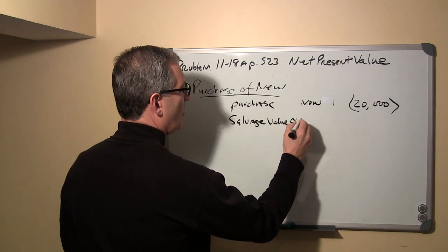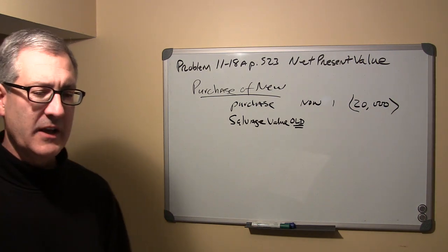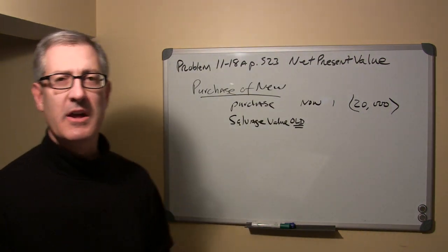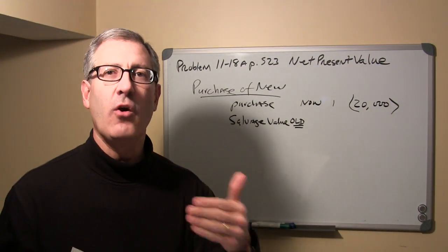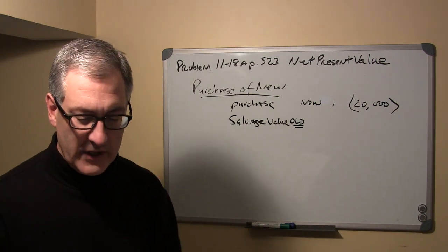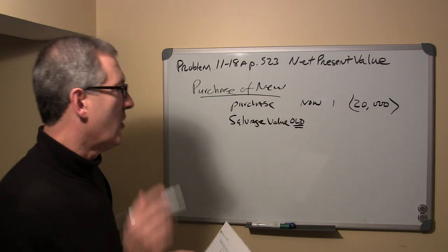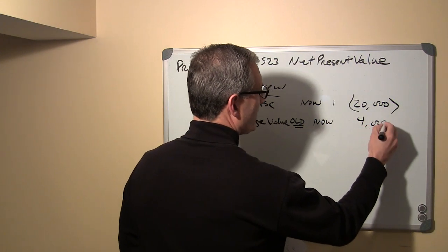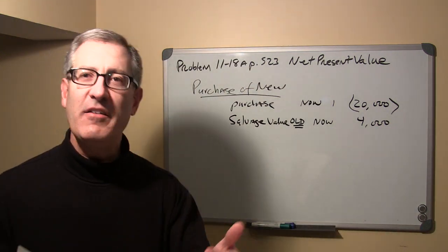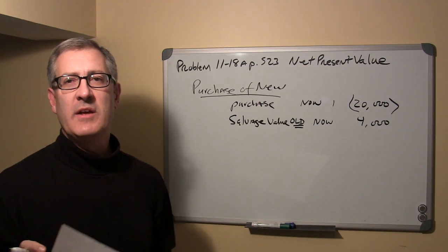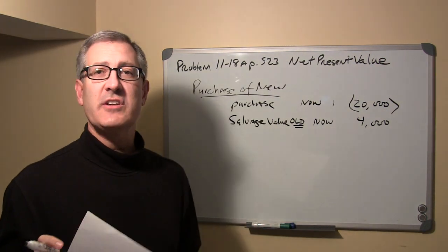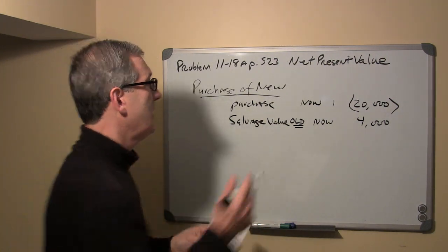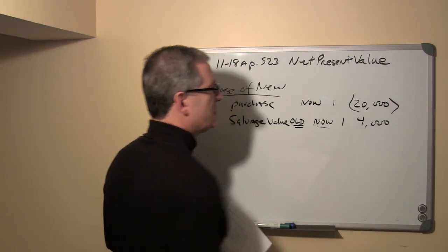The next cash flow is the salvage value of the old generator. If the company purchases a new generator, they can get rid of the old one. That old generator has a salvage value right now of four thousand dollars — what they could sell or scrap it for. This inflow occurs now, only once.